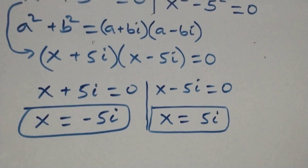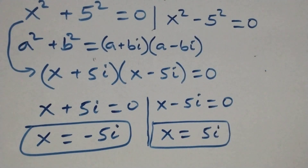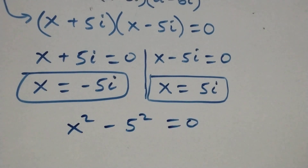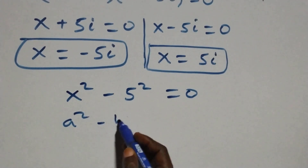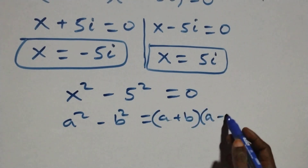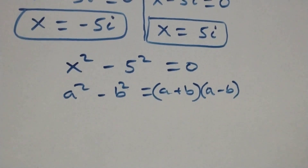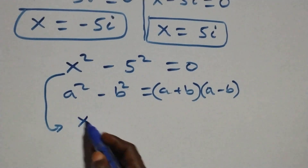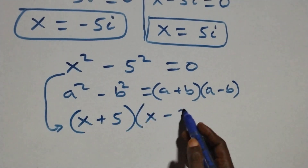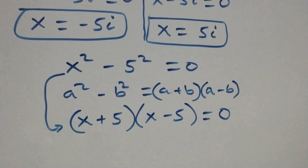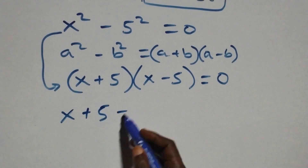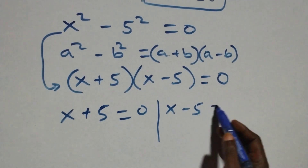From the second case, x squared minus 5 squared equals zero, this also follows when we have a squared minus b squared, which is the same thing as (a + b)(a - b). What we have becomes (x + 5)(x - 5) equals zero, giving two possible cases: x plus 5 equals zero, or x minus 5 equals zero.